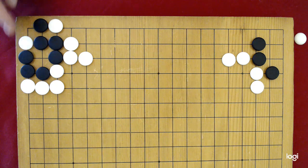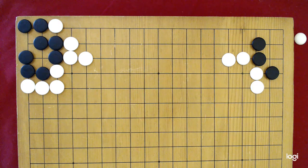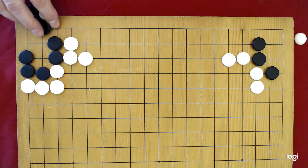So now black has two eyes. Here's a third co-threat, Atari. So that group leaves, that shape leaves three co-threats for white. It's always nice to keep in the back of your mind.